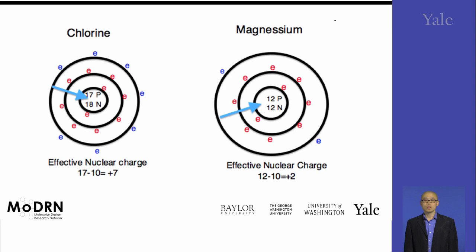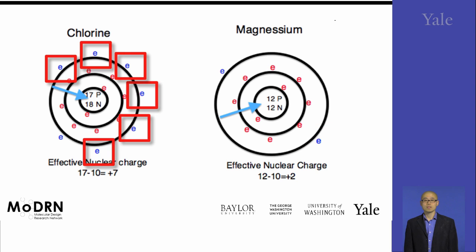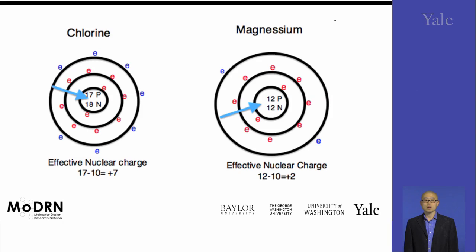In this case, magnesium has two electrons as valence electrons, and chlorine has seven. The net nuclear charge is the charge difference between the nuclear charge and the valence electrons. As shown here, magnesium has a two-plus effective nuclear charge, and chlorine has seven.